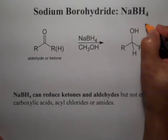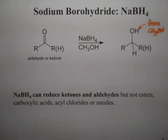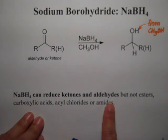The hydrogen on the oxygen comes from the alcohol solvent — whatever alcohol you're using provides the hydrogen that goes on the oxygen. So we have two reducing agents: lithium aluminum hydride, an incredibly strong reducing agent, and sodium borohydride, which is only good for ketones and aldehydes. In that sense, it's a selective reducing agent.